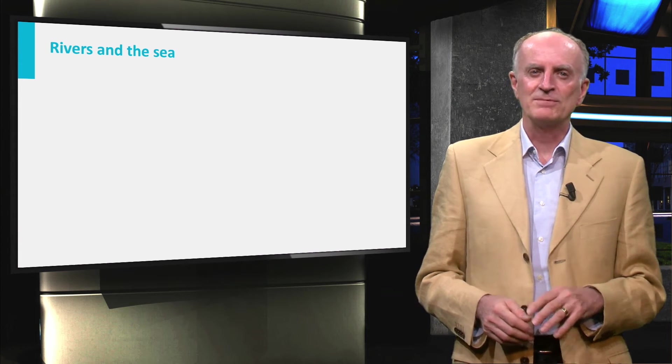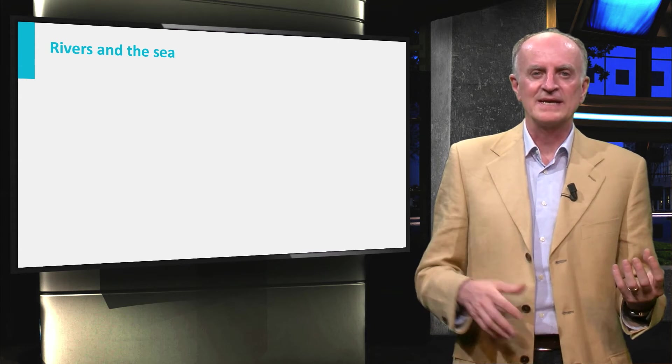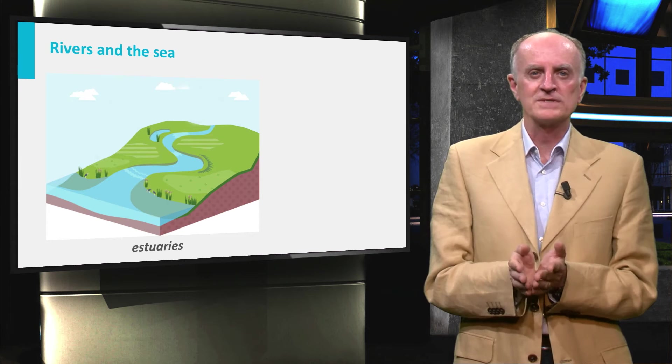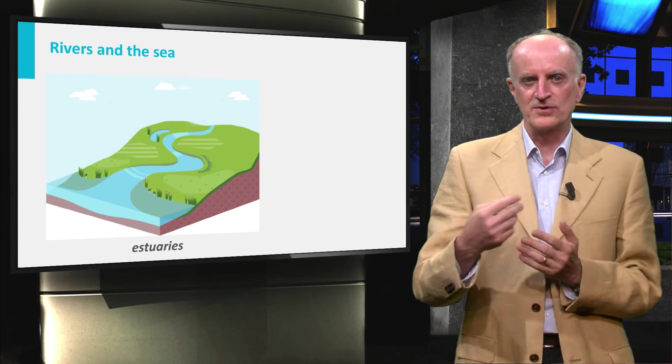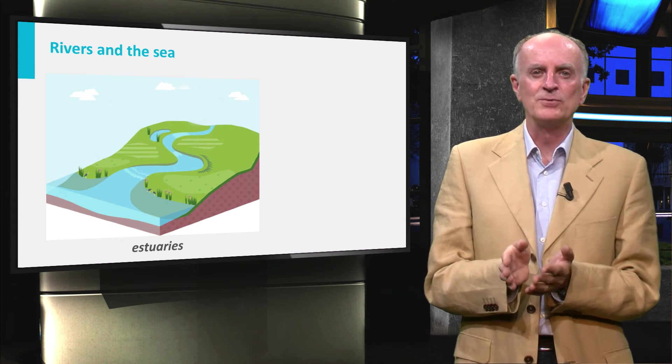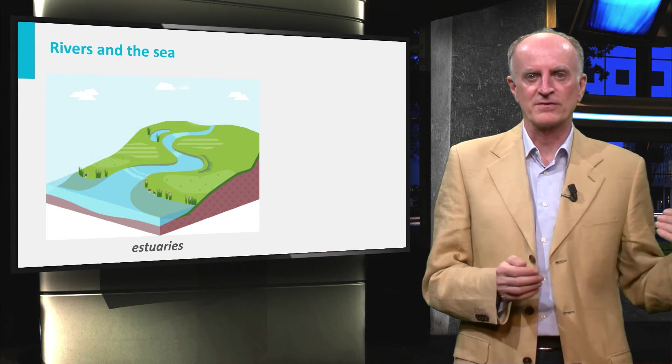We distinguish two end members, estuaries and deltas. Estuaries are semi-enclosed coastal bodies of water with free connection with the open sea and where sea water is measurably diluted with fresh water derived from land drainage.